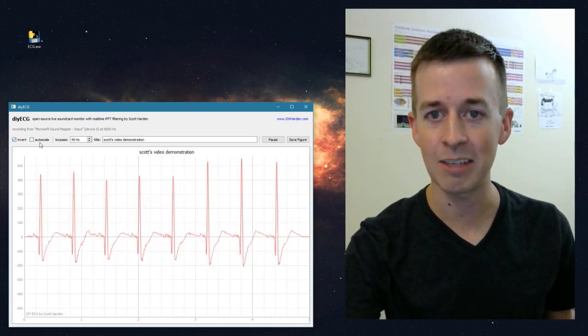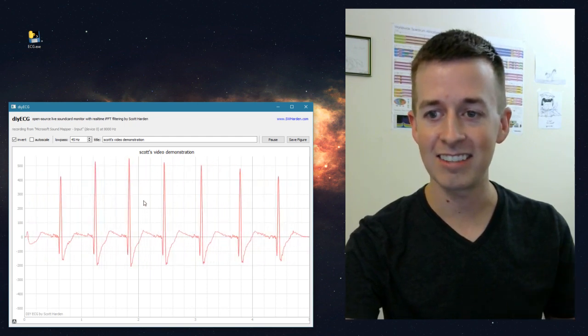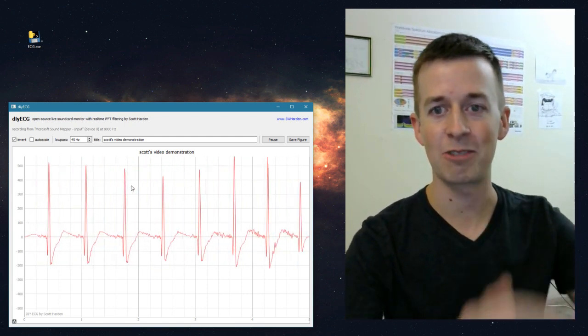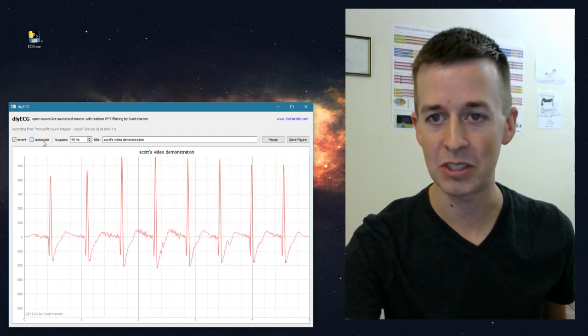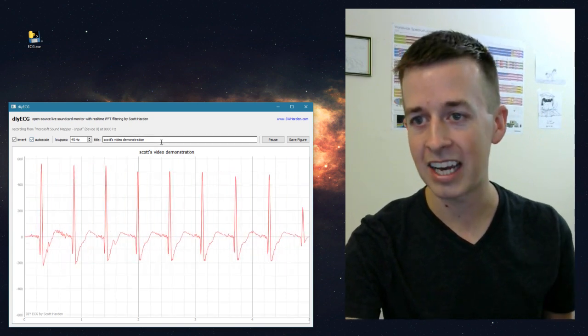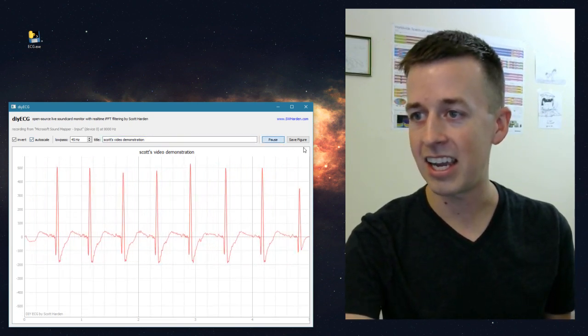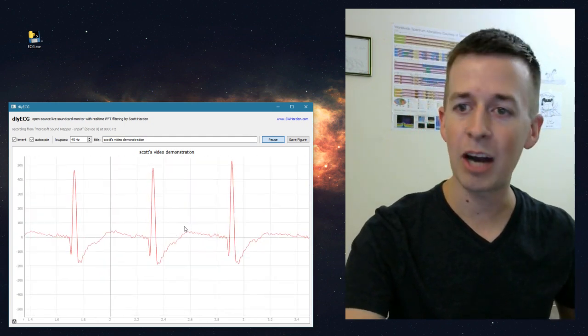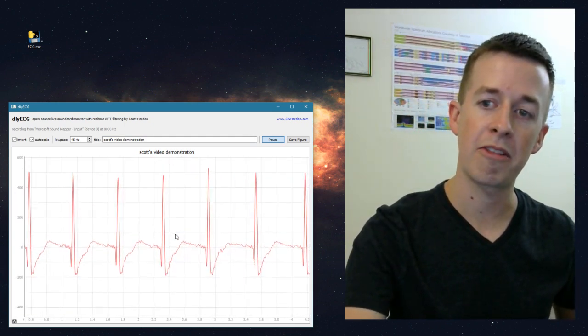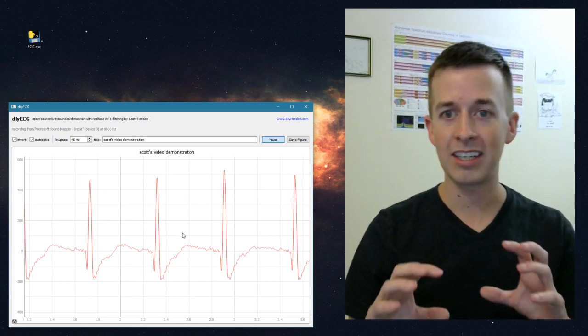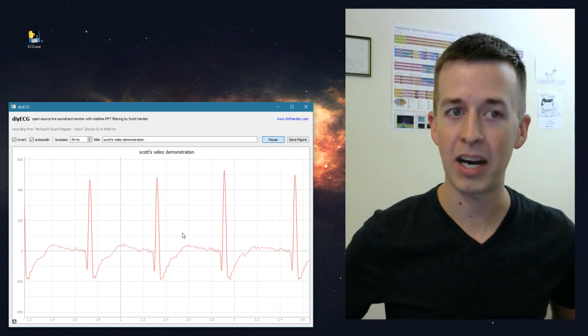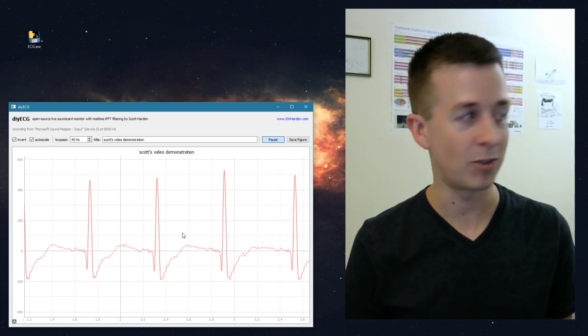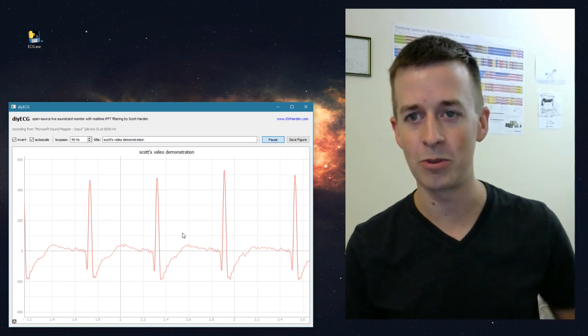Autoscale makes pretty good sense. If you leave it unchecked, then it doesn't automatically change the vertical axis, even if noise comes through or something like that. Lowpass, we've already looked at. The title makes sense. And if we pause it, you can sort of zoom in to any part of the signal. I will mention that I'm doing this with the Qt4 window libraries, and I'm using PyQt4 Graph or Qt Graph or something like that to do the graphing.